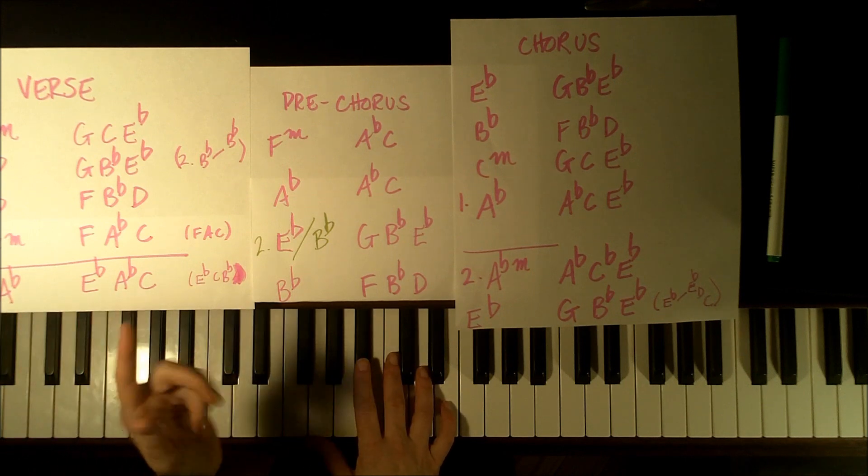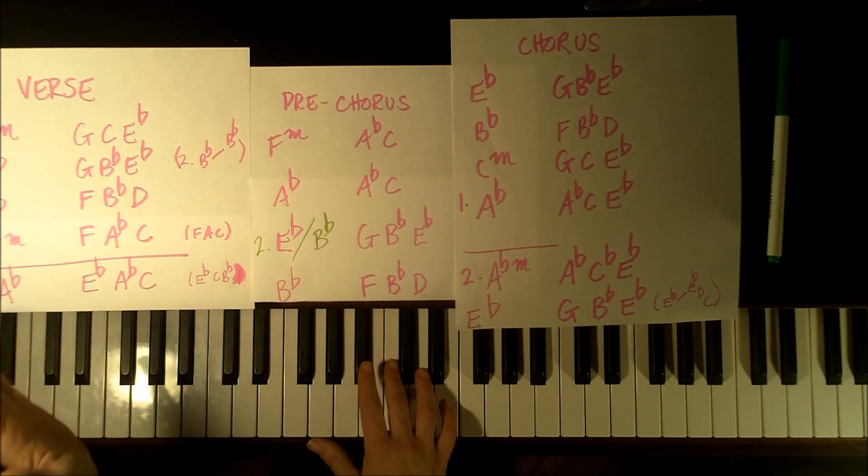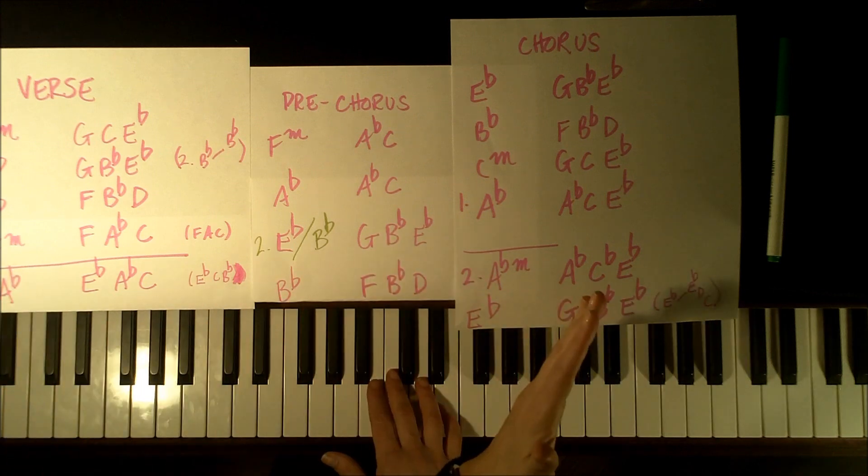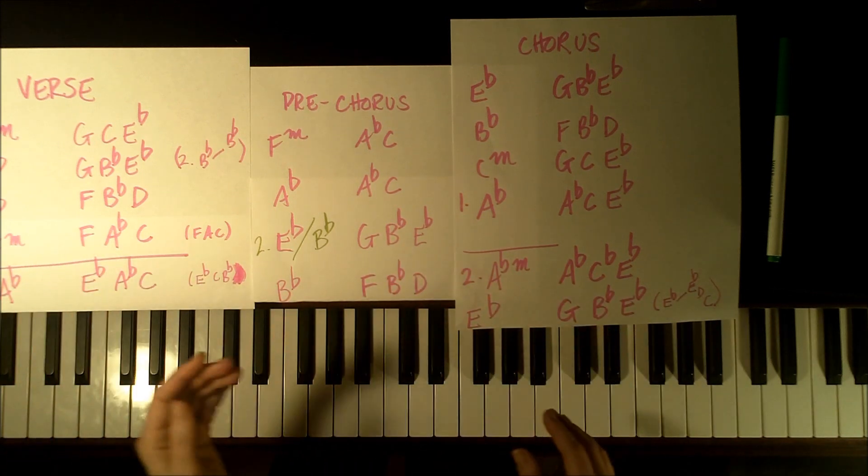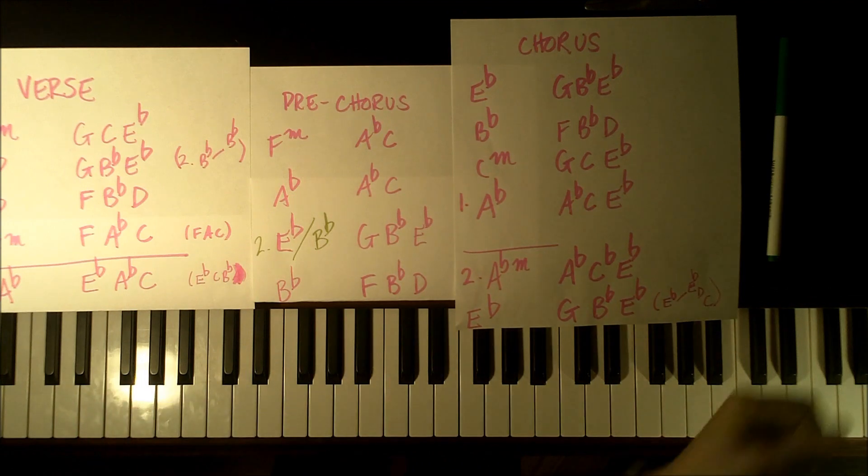And again, the very simple texture for the verse. So the piece plays verse, pre-chorus, chorus. And then it does it again. Verse, pre-chorus, chorus. And the next section of the piece is a bridge.